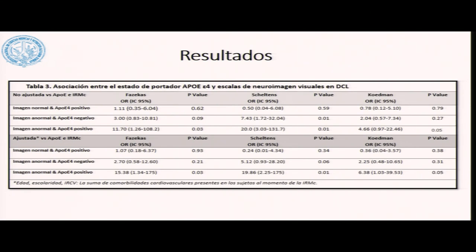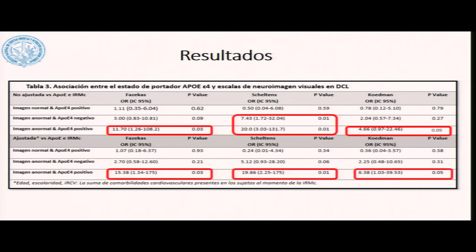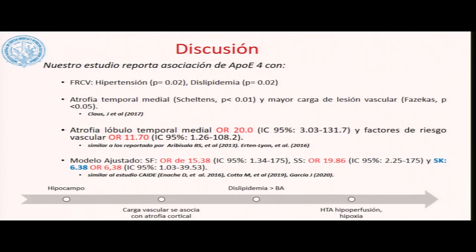Al analizar el modelo de regresión binaria asociando el estado portador y las escalas de neuroimagen visuales en los pacientes con deterioro cognitivo leve, en el modelo no ajustado, aquellos con imágenes anormales —atrofia temporal, parietal y mayor carga de lesión vascular— que tenían el estado portador tuvieron un riesgo aumentado. En el modelo ajustado por edad, escolaridad y un índice de factores de riesgo cardiovasculares, la asociación se mantuvo: estos pacientes tenían mayor atrofia temporal, mayor atrofia parietal y mayor componente de afectación vascular.